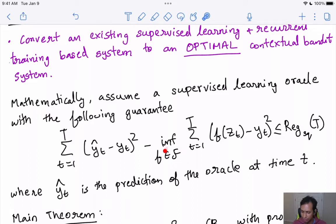If you take F to be the set of all neural nets, which is a very powerful representation class, we are saying that this regression oracle needs to come very close to that. Typically you want to assume this to be something like square root of t, or if you divide this by t, you want this to go to zero as the number of times goes to infinity.